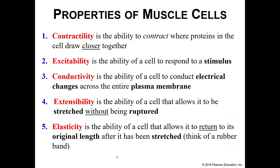All of your muscle cells are capable of a couple of things. They have the property of contractility, which means they can contract where the proteins within the cells draw closer together. Your muscle cells are excitable, which means they're able to respond to a stimulus. Conductivity is the ability to conduct electrical changes across your plasma membrane — so you are conducting a signal across the plasma membrane of your muscle cells. If you start a signal on the left side of a muscle cell, you can send it all the way to the right side.